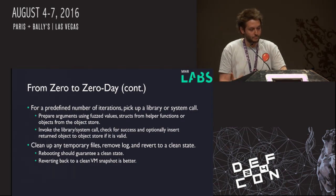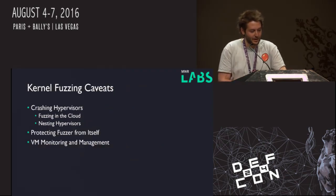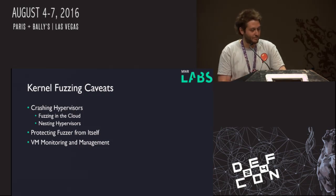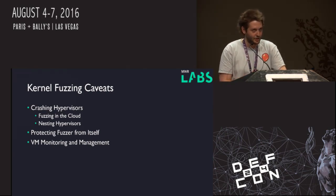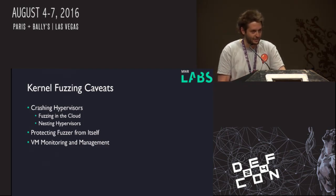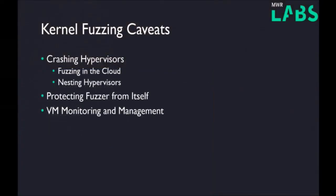We're also looking at how we can revert back to a VM snapshot, as this will guarantee a clean slate to start from. A few caveats to be aware of if you're going to use this framework: we found a number of bugs in the hypervisors, which has meant we haven't placed this up in the cloud — Amazon would get really annoyed with us if we start crashing their hypervisors. We're looking at running it under QEMU, which is a bit inception-y but should hopefully work. We also need to protect the fuzzer from itself — on a number of occasions the fuzzer has managed to get a handle to itself and kill itself. We're moving toward monitoring the guest from the host so that if the fuzzer kills itself, we can detect that and start it off again.